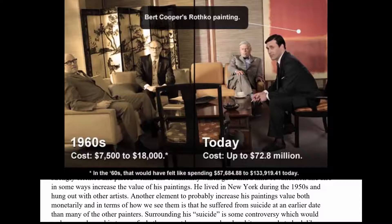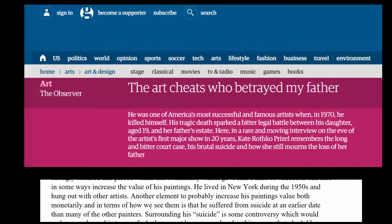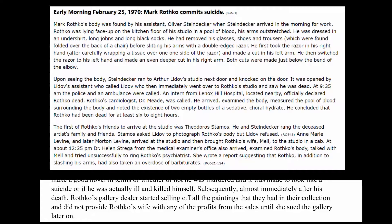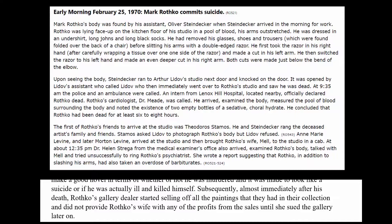There's some evidence that he might have been killed. The controversy around his suicide is that right after his death, the gallery representing him started selling his work and didn't give any of the proceeds to Rothko's widow. Some teachers also say the quality of the painting dropped significantly before his death — those are reasons why he could have been murdered to increase the value of the paintings, and it certainly adds to the shadiness.